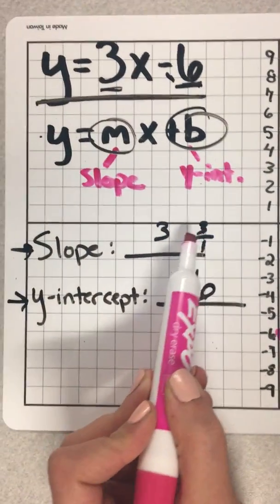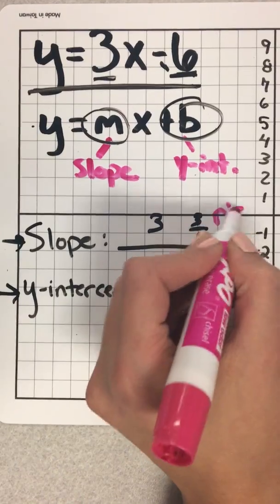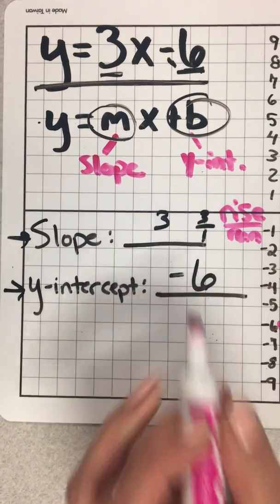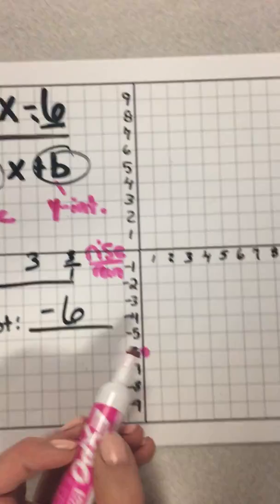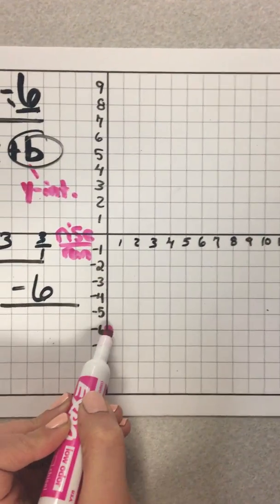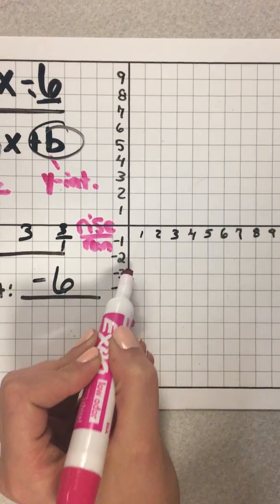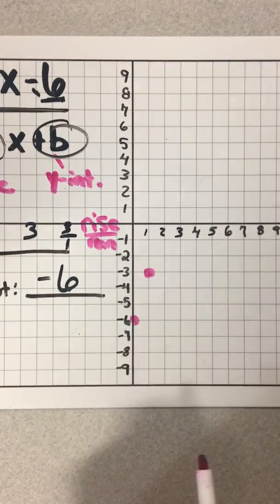And now I can graph points by using my slope, which is 3, or we wrote it as a fraction because, remember, slope is rise over run. So we're rising 3, and we're running 1. So from my starting value of negative 6, I'm going to go up 3: 1, 2, 3 over 1. There's our next point.